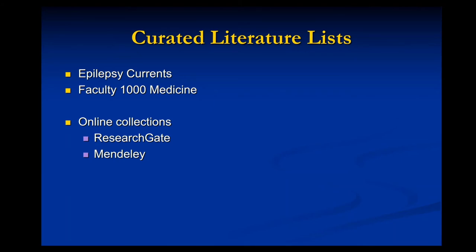There are also a couple of other online collections: ResearchGate and Mendeley, where people doing research in particular areas can post their papers or bibliographies. You can follow specific authors and get alerts when they publish new papers. If you know groups of people publishing in your particular research area, you can sign up to be notified every time they have a new publication.